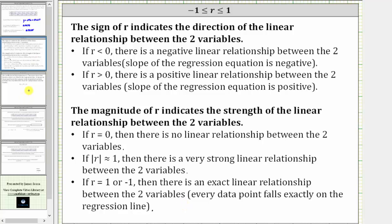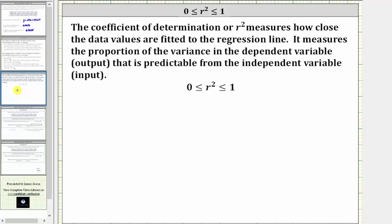And now let's talk about what the coefficient of determination indicates. The coefficient of determination, or r squared, is always in the interval from zero to one, and it measures how close the data values are fitted to the regression line.